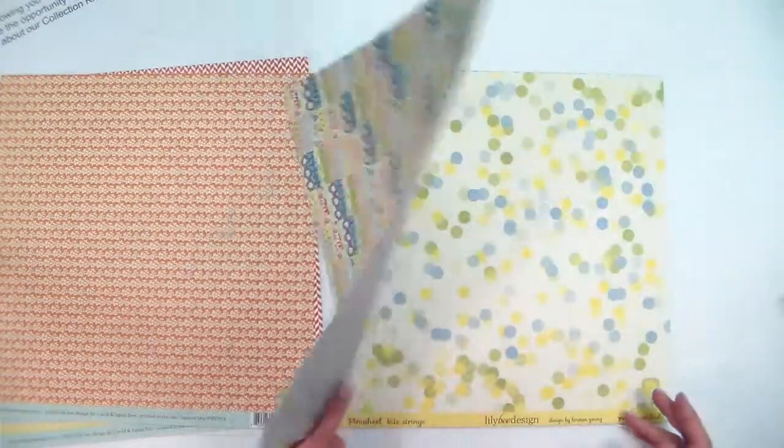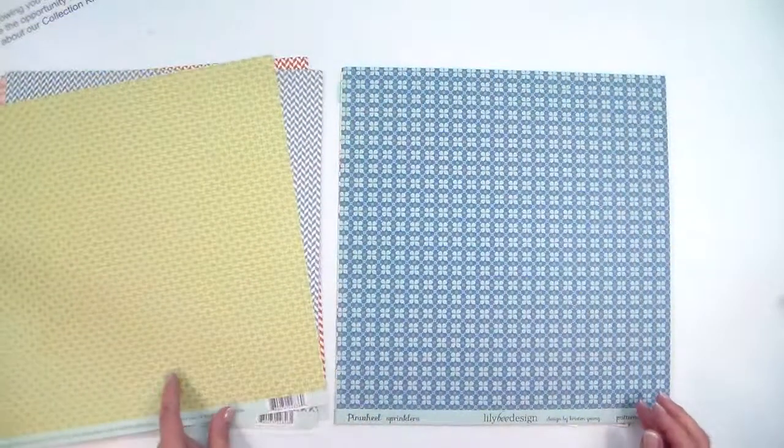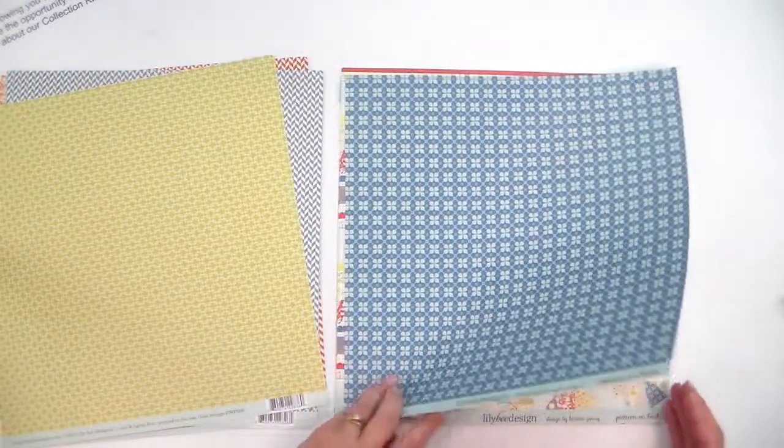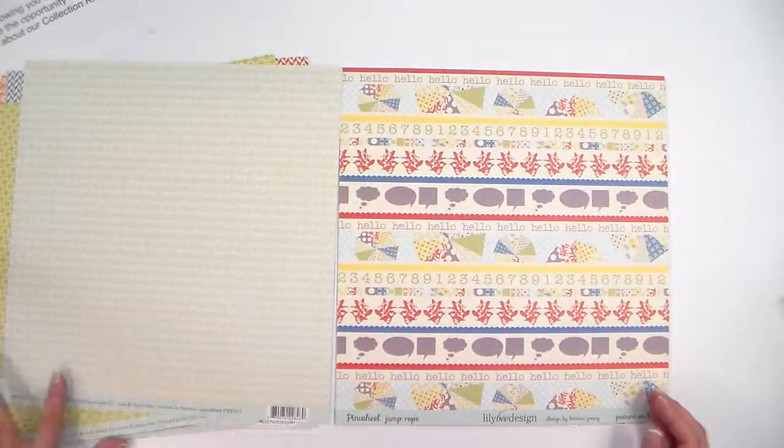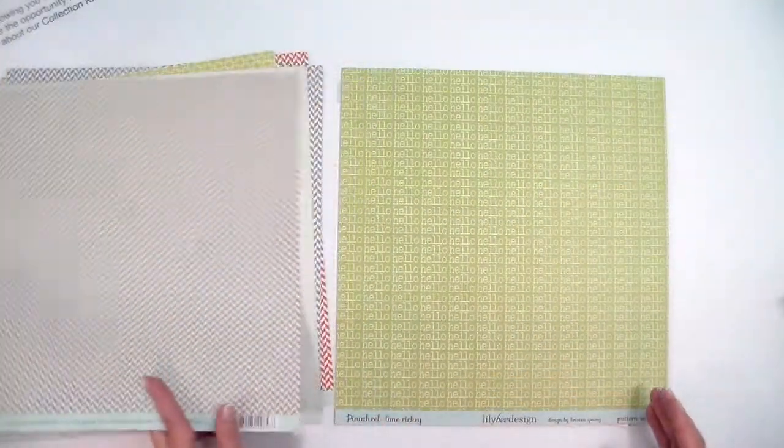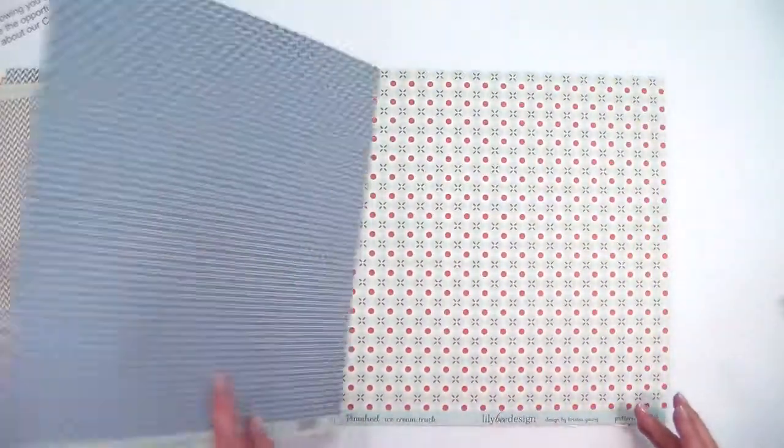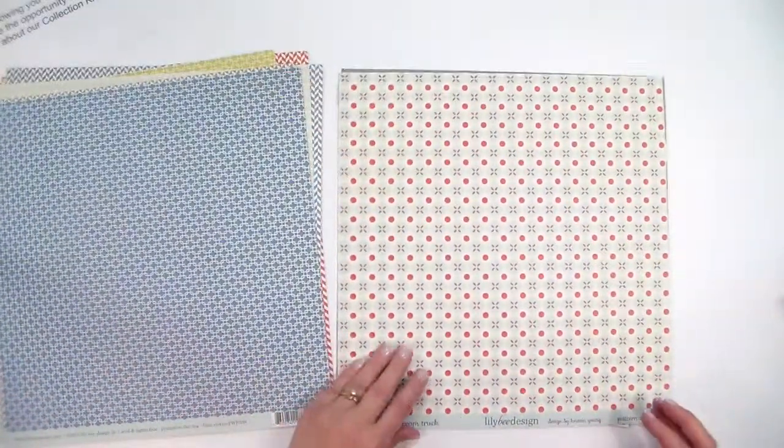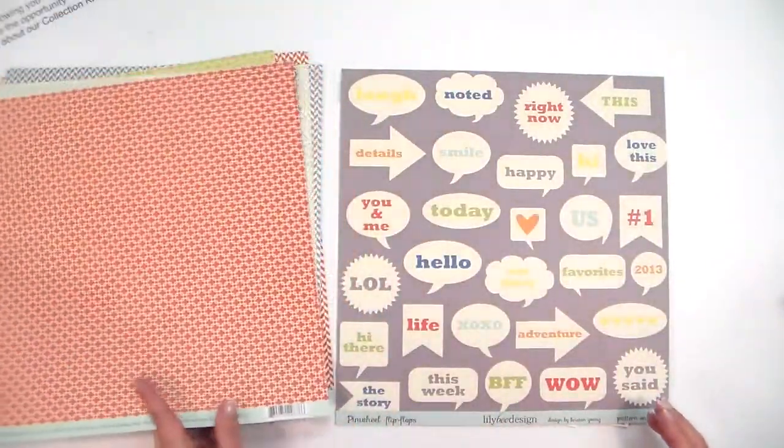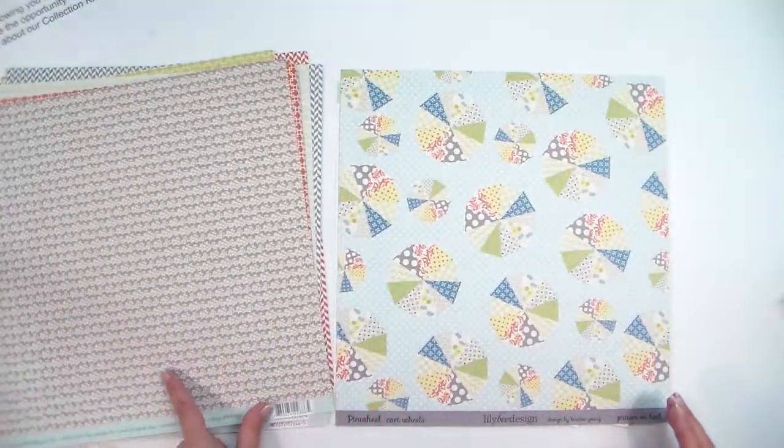What we do next is what makes our kits unique. We come in and we add different embellishments that will enhance the manufacturer's line. The embellishments that we use per kit will vary from kit to kit. If the kit doesn't come with a lot or if we just pick and choose the papers, we normally add more embellishments. But if the kit comes with a lot of stuff, we normally will not add that many embellishments to it.